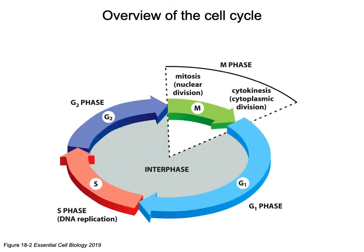Looking at an overview of the cell cycle, there are four phases. Starting at G1 phase, this is where the cell is going to grow. During S phase, DNA is going to be replicated. G2 phase is an additional step of cell growth, because eventually it's going to divide. We need periods of growth and periods of replication. G1, S, and G2 are all part of what we recognize as interphase.